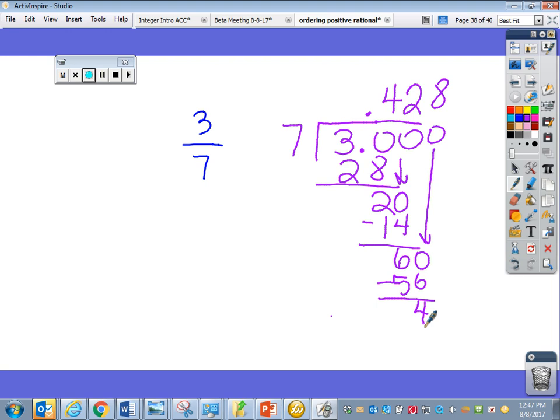So I can keep going if I want to, but my main rule is that you can stop after 3 numbers and then round to the hundredth place. So 3 sevenths is about .43 because that 8 tells the 2 to round up.